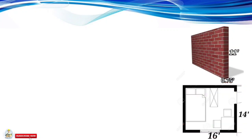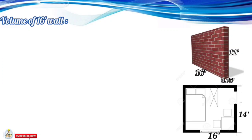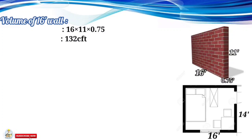Now we will find the number of bricks for the 16-foot wall. Its volume is: length 16 feet × height 11 feet × thickness 0.75 feet. Since volume equals length multiplied by breadth multiplied by height, 16 × 11 × 0.75 gives us 132 cubic feet.